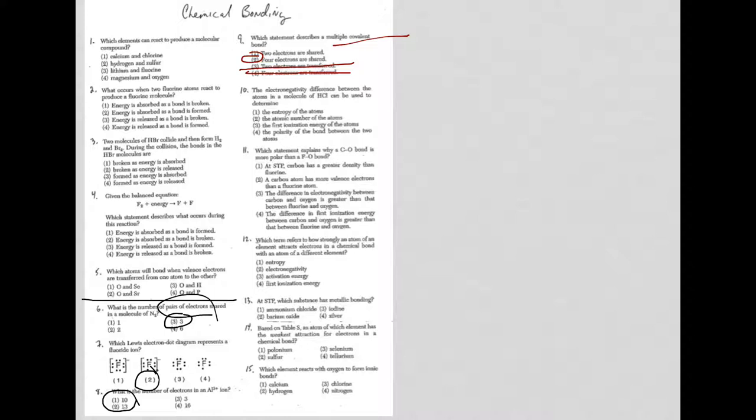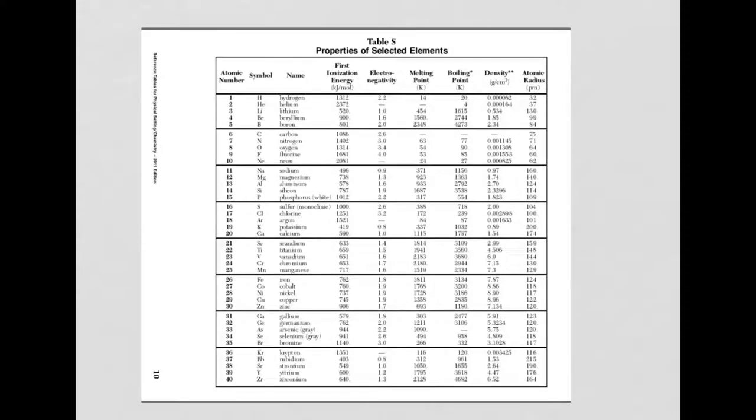Move on to number 10. Electronegativity difference between the atoms in a molecule of HCl can be used to determine the electronegativity difference. Well, first of all, you've got to remember what electronegativity is. Electronegativity is a measure of an atom's ability to pull an electron towards itself. Chlorine is more electronegative than hydrogen. And, of course, I could look that up. So, don't take my word for it.